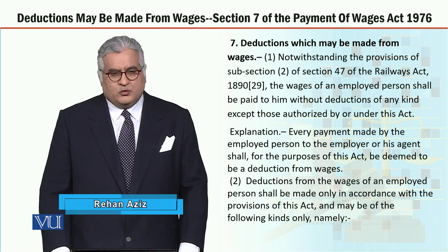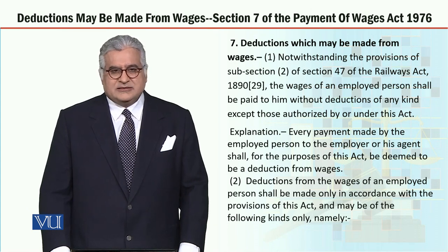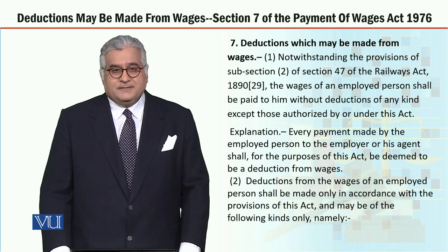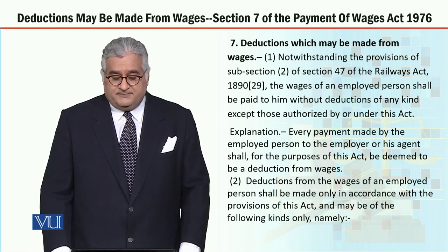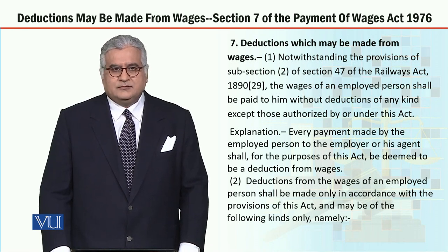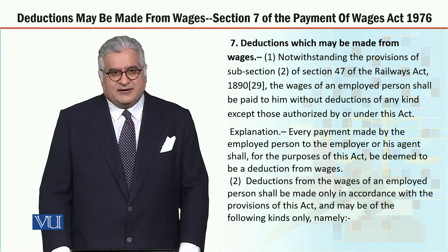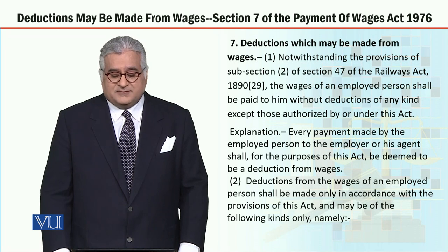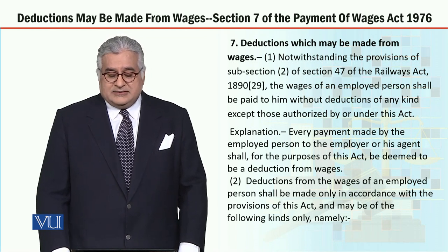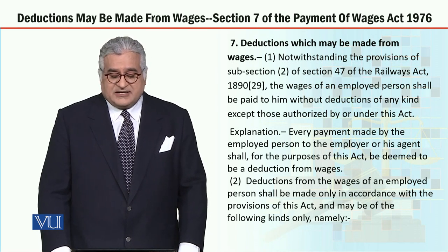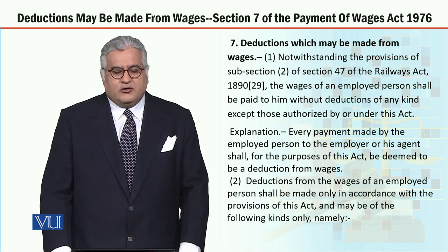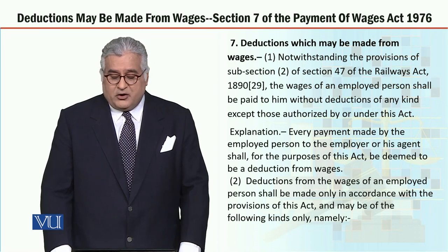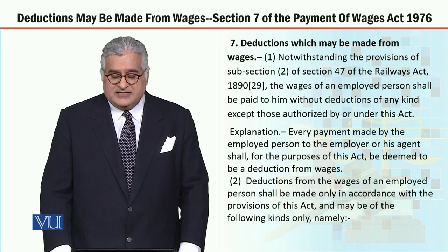Section 7, subsection 1 — notwithstanding. The term 'notwithstanding' means that whatever is written somewhere else, its value is zero, and you should understand what is going to be explained here. So notwithstanding the provisions of subsection 2 of section 47 of the Railways Act 1890, the wages of an employed person shall be paid to him without deductions of any kind, except those authorized by or under this act.